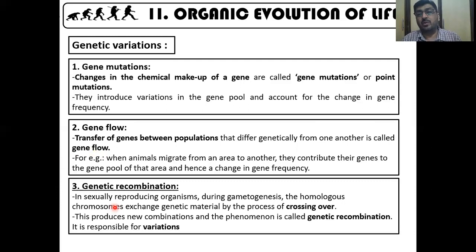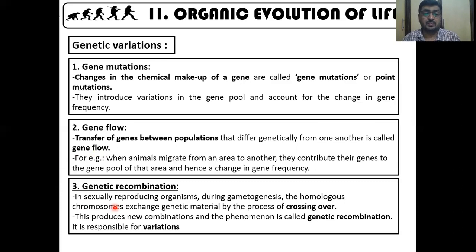Genetic recombination — through meiosis and crossing over, which we already know about — is also responsible for variation in the gene pool.